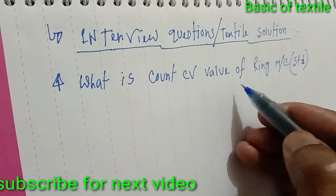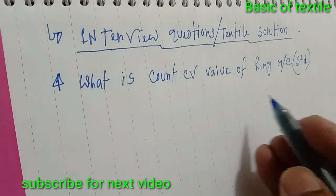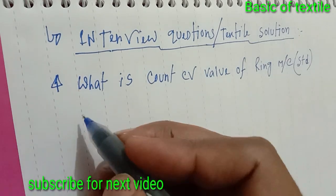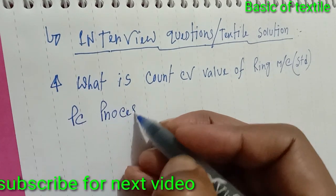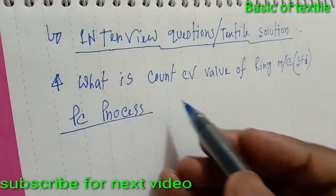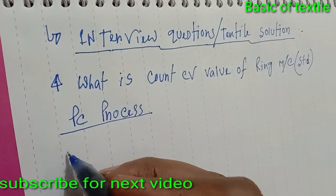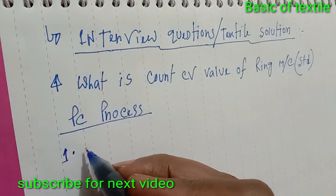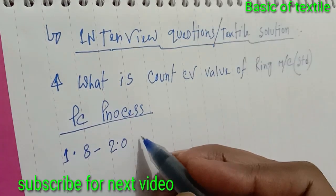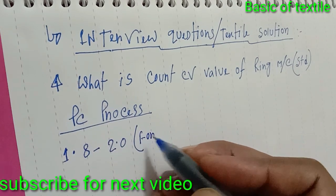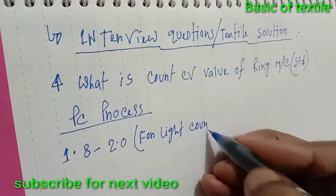Standard count CV value, process wise standard for the PC process: 1.8 to 2 for light count.